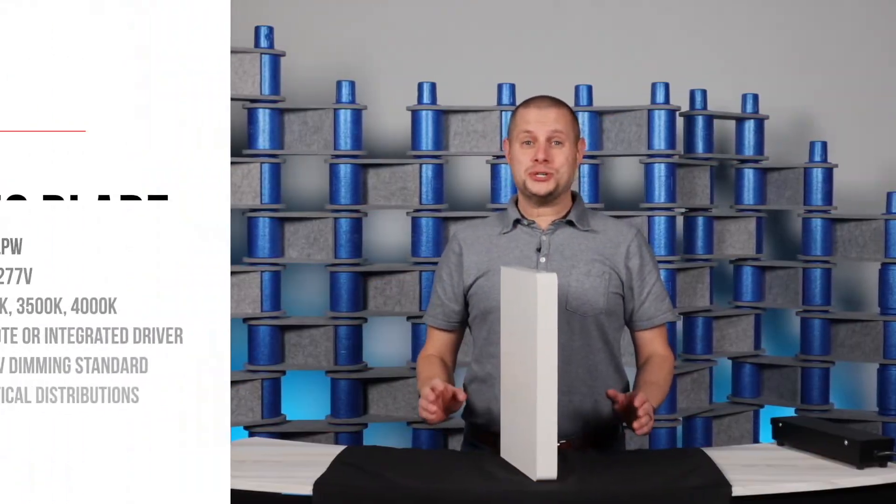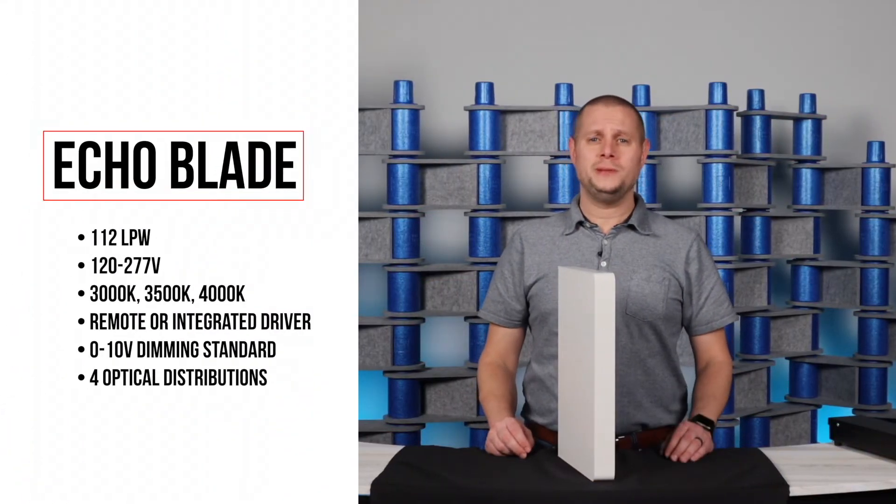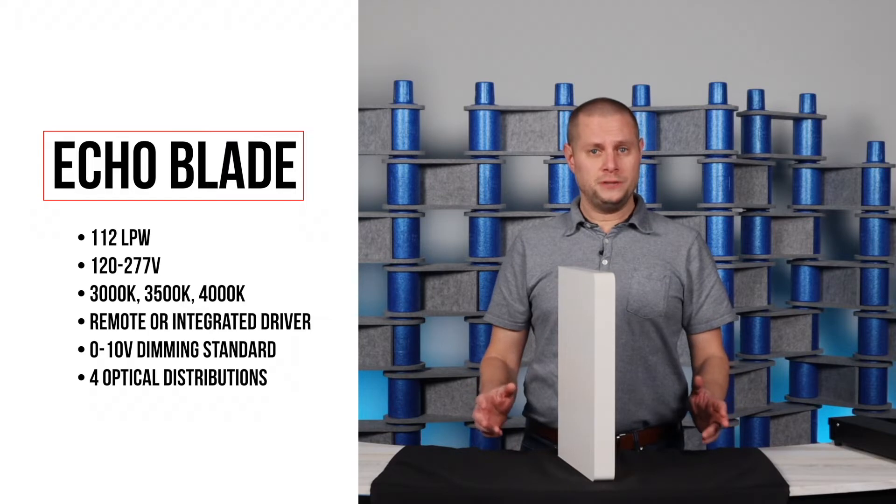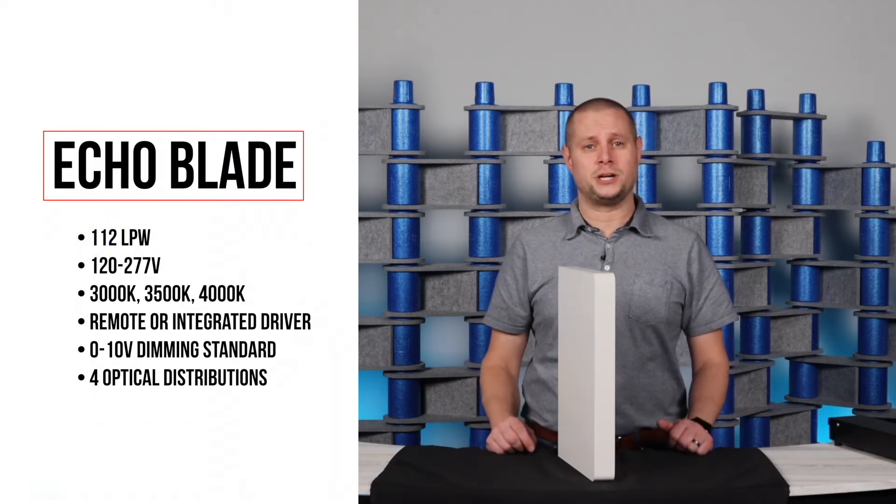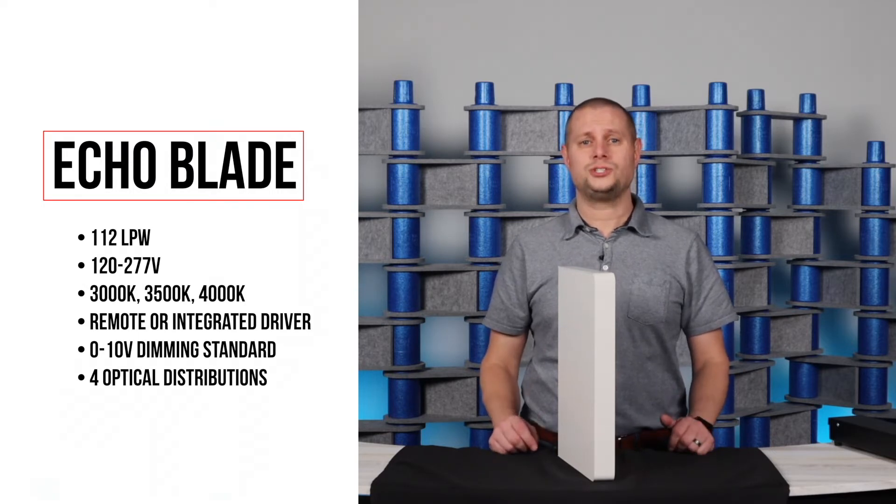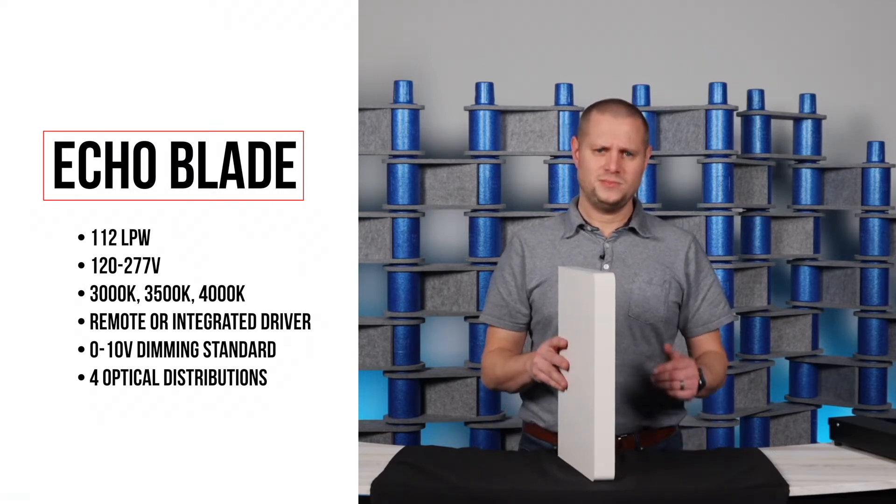The SPI Blade is a true asymmetric fixture with extremely efficient optics. The fixture delivers up to 112 lumens per watt, helping you keep indirect lighting on your energy conscious projects and still meeting the state's stringent energy codes. Let's see this fixture in action.